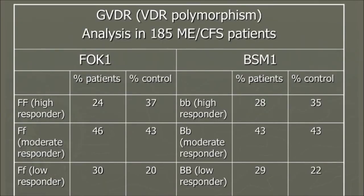When we look at the VDR polymorphisms in 185 ME/CFS patients, we see that in the control groups for both polymorphisms, there are more people who are high responders in the controls than in the patients. There's a substantially lower amount of people who are high responders to GC-MAF, and a substantial increase in the subgroup of patients that are low responders to GC-MAF. This is the same for both polymorphisms.